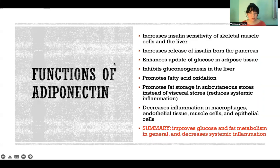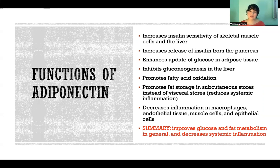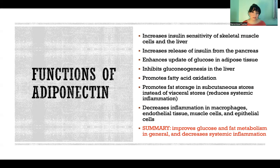Now to go on to some more of the detailed physiology of this hormone. It increases insulin sensitivity, specifically of skeletal muscle cells and the liver. It increases release of insulin from the pancreas as needed. It enhances our uptake of glucose by adipose tissue, inhibits gluconeogenesis in the liver — meaning it stops the liver from creating new glucose — promotes fatty acid oxidation, and promotes fat storage in our subcutaneous stores instead of visceral, which is a good thing.